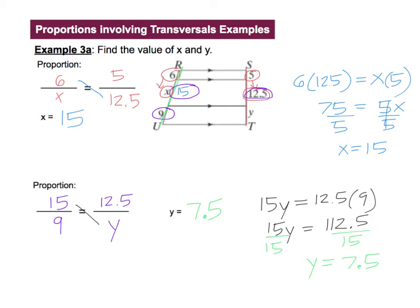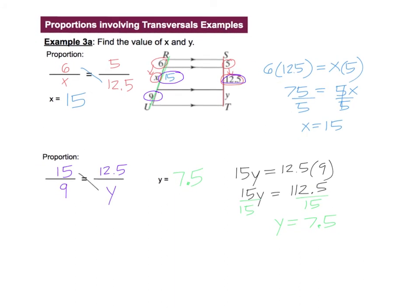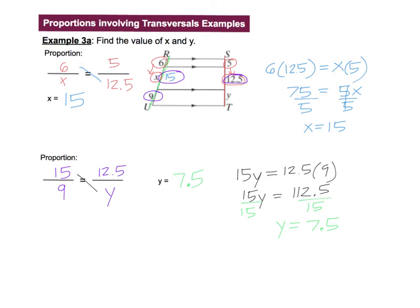Now I just want to mention one more time that there's way more than one proportion that we could have set up to get that answer. In fact, we could avoid using the 15. Like, let's say that I accidentally solved for X wrong and 15 wasn't correct. Well, if that wasn't correct, I maybe wouldn't want to use it. So let's see if we can just match up the pieces like 6 with 9. 6 over 9 equals 5 over Y. That would also work.